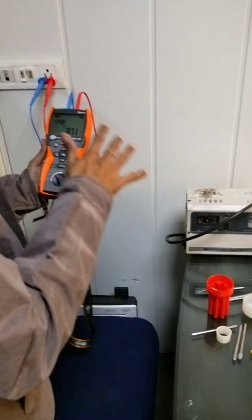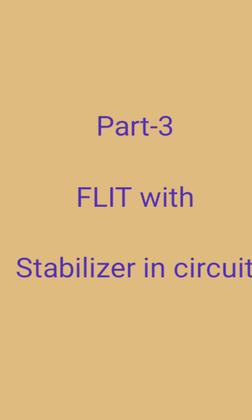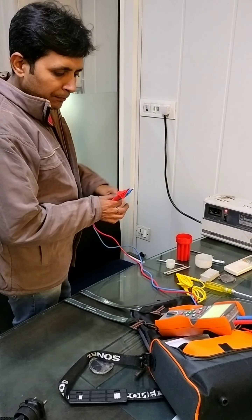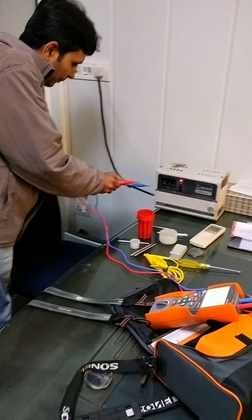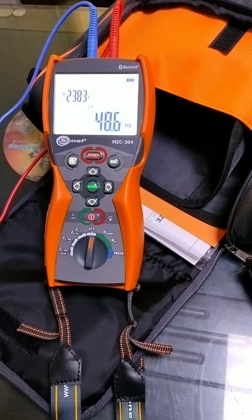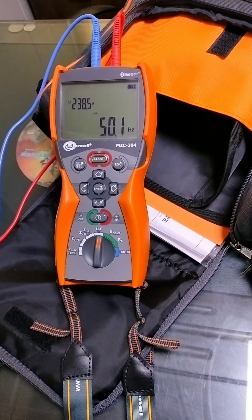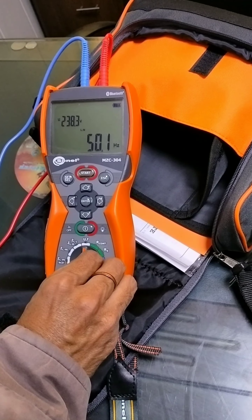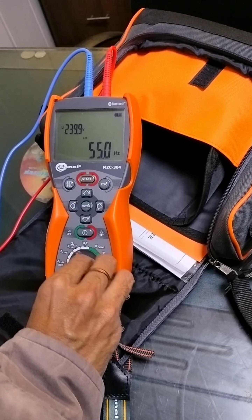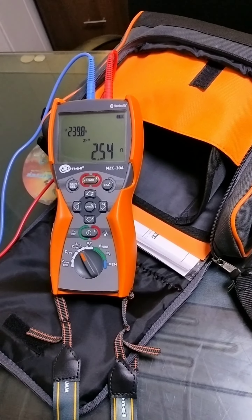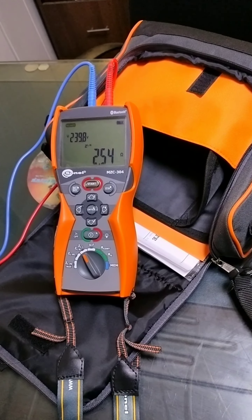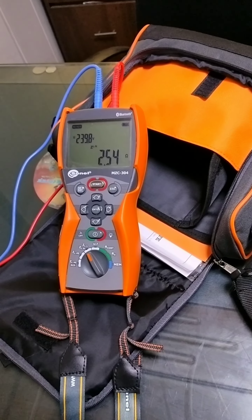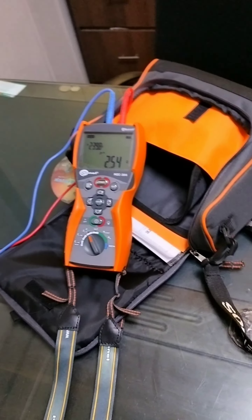Now let's see what happens when I connect it through a stabilizer. I am using one of the stabilizers to see the impact on that for loop impedance. You can see here the frequency is 51.1 and voltage is 238, it is varying. Now I am going to perform the same test — for loop impedance between phase and neutral. You can note it down, it is now 2.54. This is the impact of using a stabilizer in our circuit. Thank you everyone.